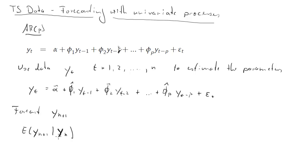Is this conditional expectation going to be the same as the unconditional expectation of Y_{N+1}? For a stationary process the unconditional mean is constant, meaning we would always forecast the same value regardless of past observations. In most cases that's not going to be the case — the past observations Y_1 through Y_N will be useful information — so in general the conditional and unconditional expectations are not the same.